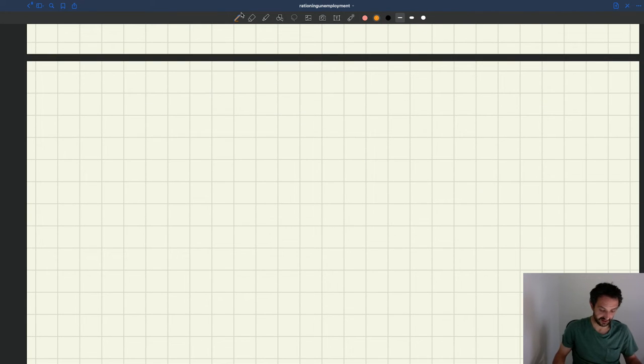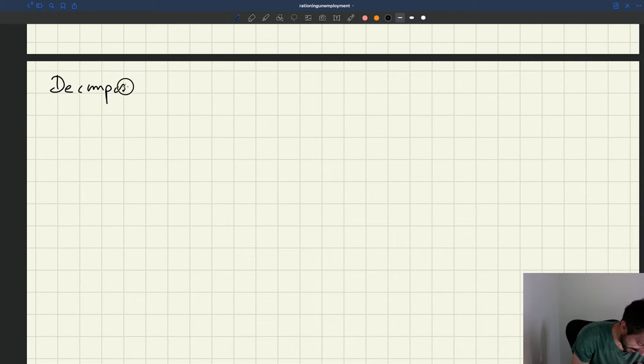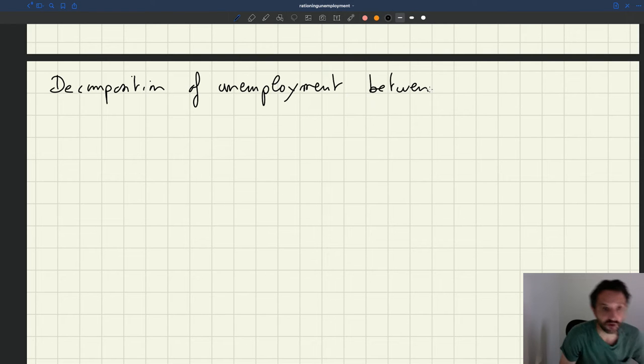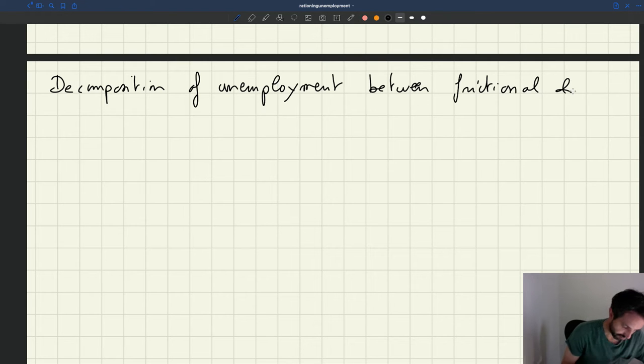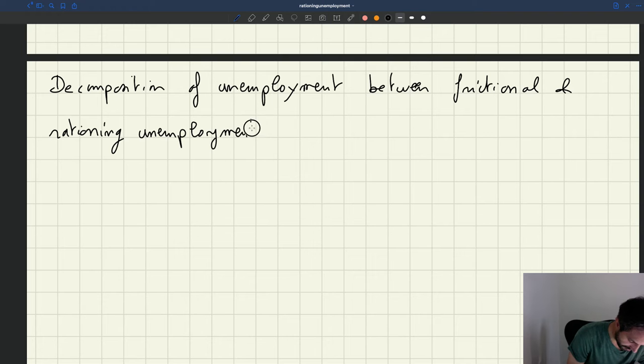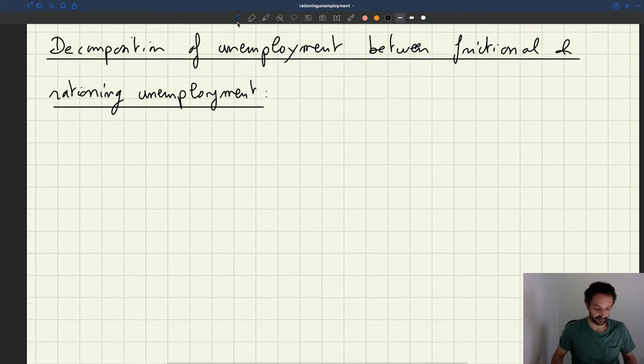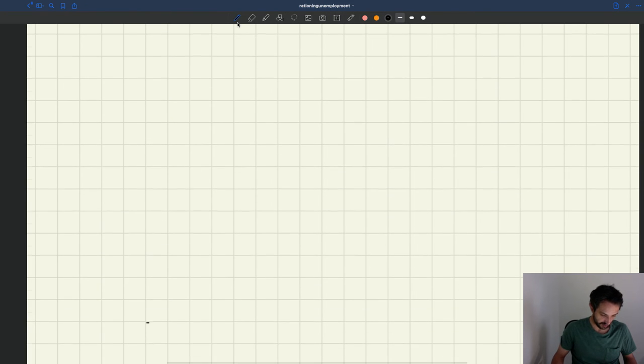So that's the last little piece of analysis that we can do. We can decompose unemployment between frictional and rationing unemployment. So let's do a graphical decomposition and then let's formalize it.